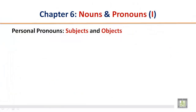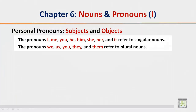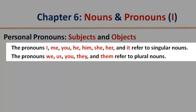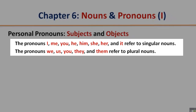Personal pronouns: subjects and objects. The pronouns I, me, you, he, him, she, her, and it refer to singular nouns. The pronouns we, us, you, they, and them refer to plural nouns.